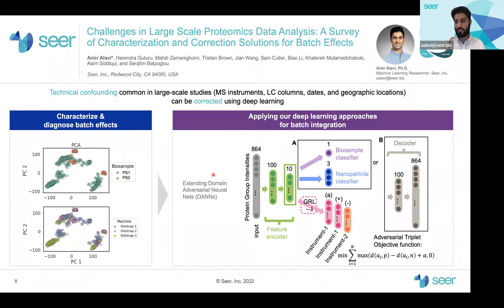We extend domain adversarial neural networks to learn batch invariant representations. The neural network is trained to learn an embedding of protein intensity data which is poor for determining which technical batch the sample is from, while simultaneously being good for predicting biologically relevant labels like the biosample. We also experiment with an unsupervised reconstruction approach.